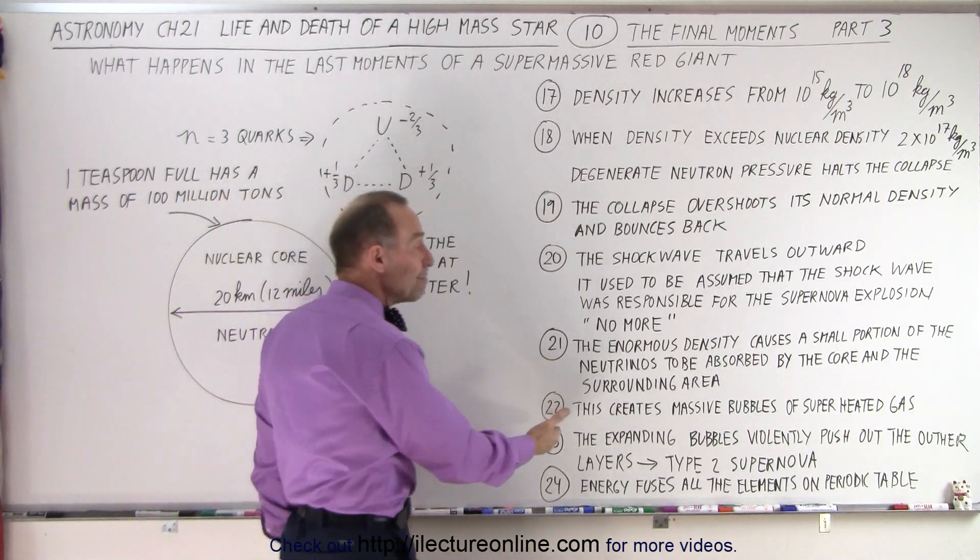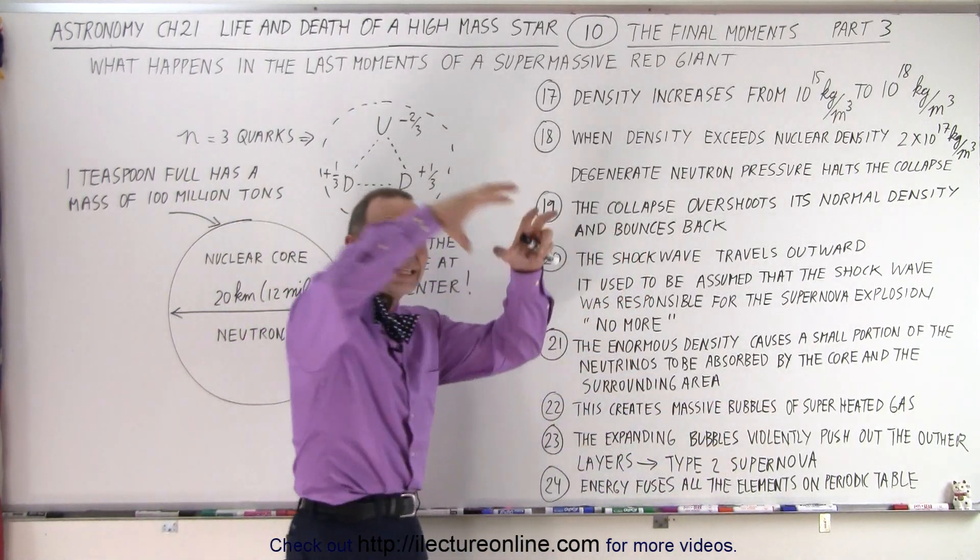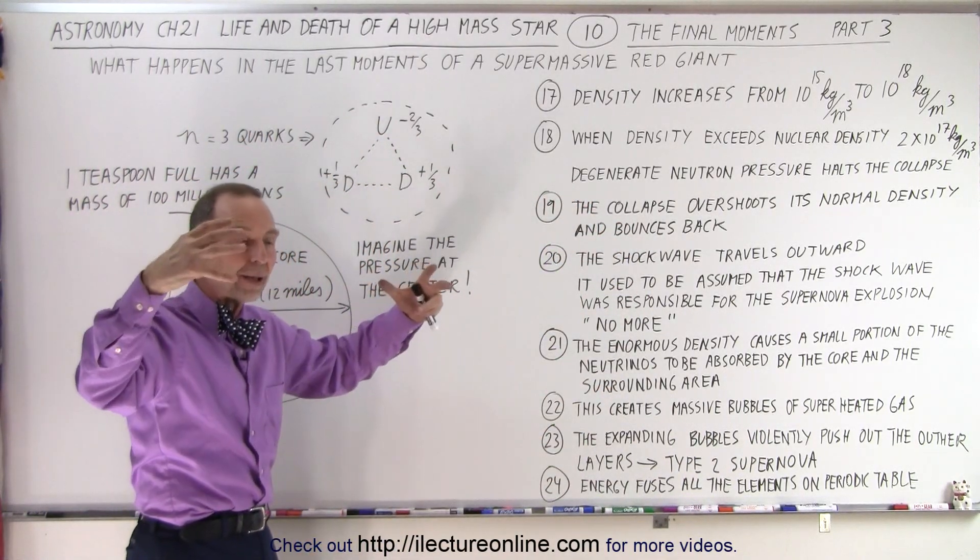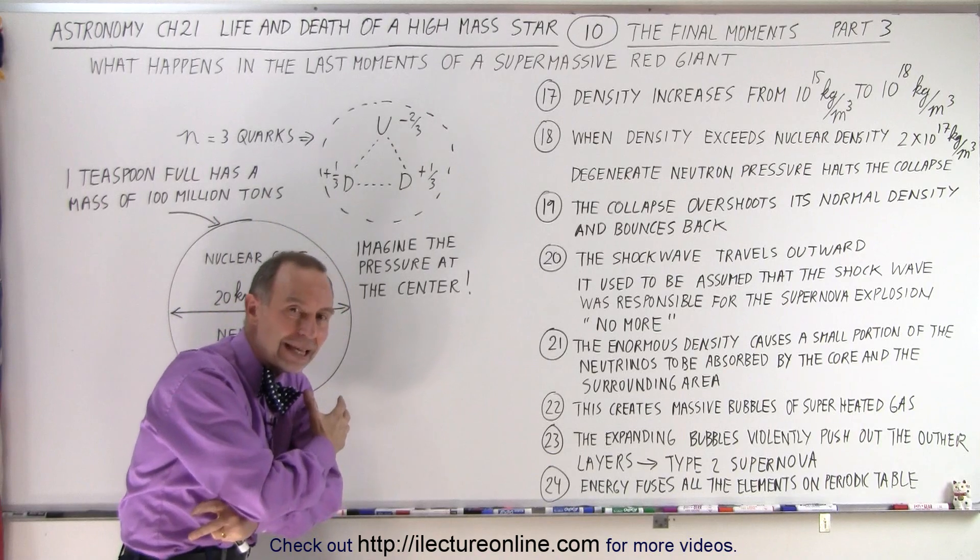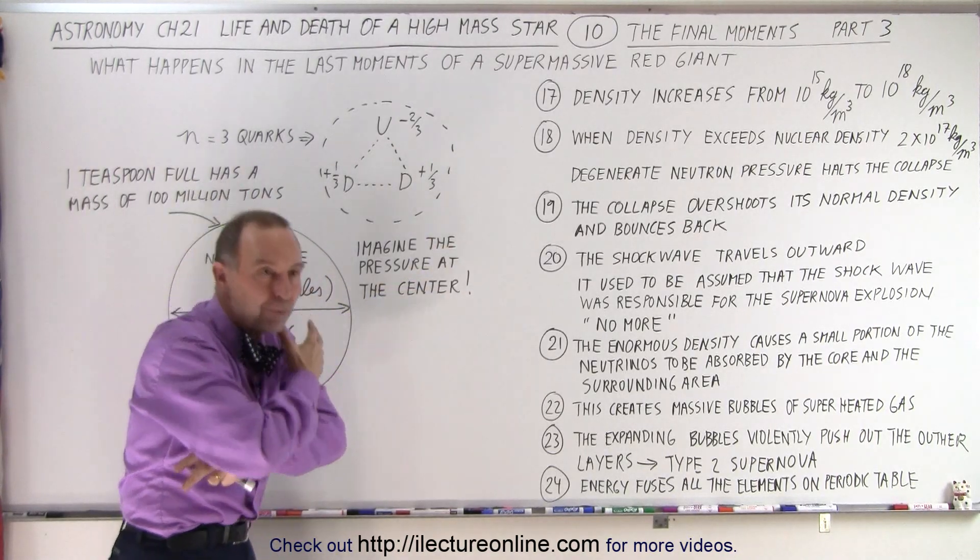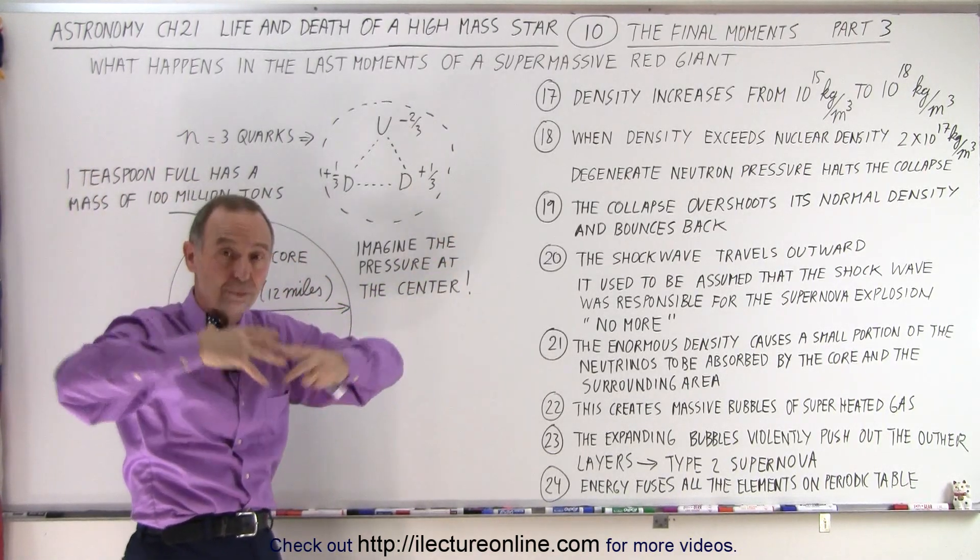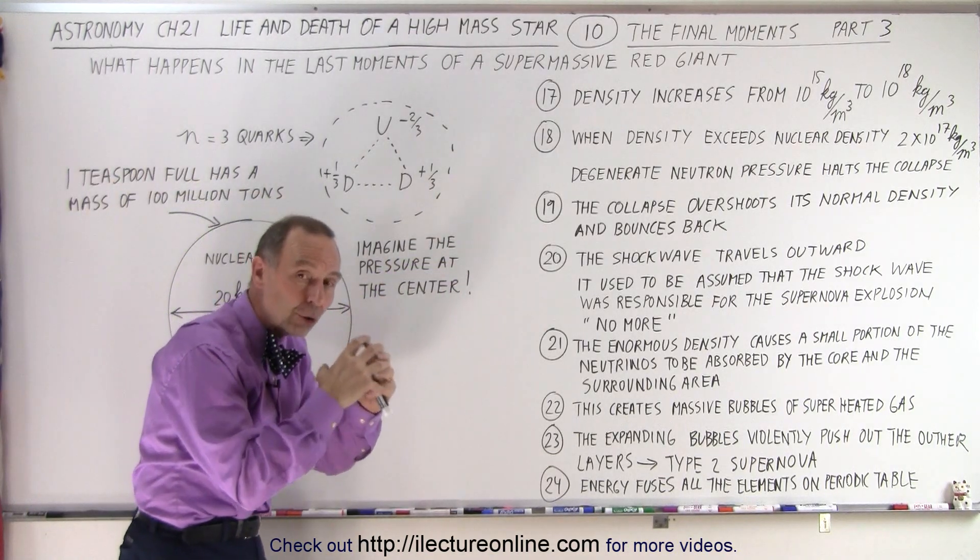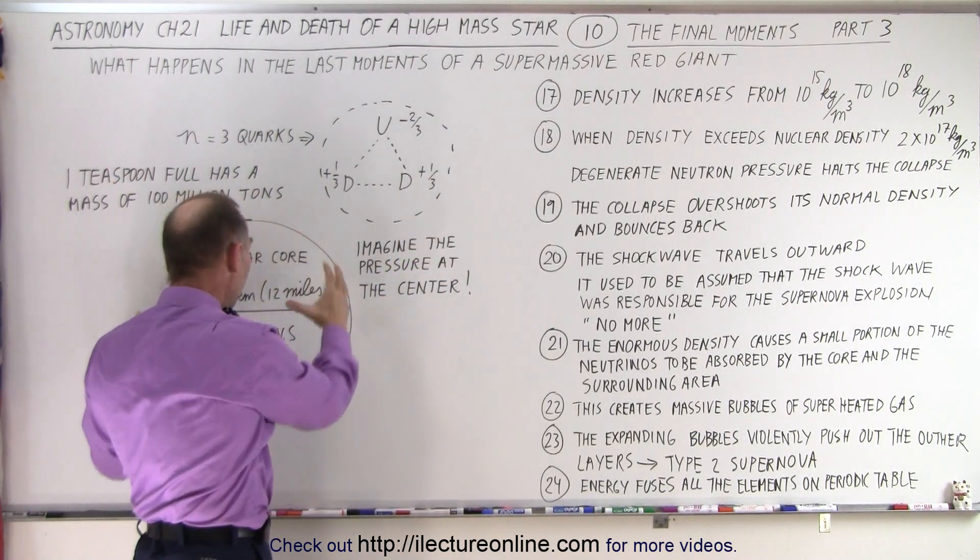And that absorption would cause an enormous increase in temperature. That increase in temperature would create massive bubbles, superheated bubbles of gas around the core. And those superheated bubbles of gas would expand enormously fast and thus pushing out violently, explosion-like, the rest of the layers of the star.